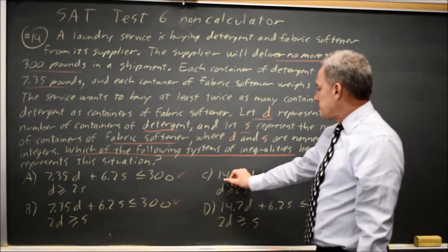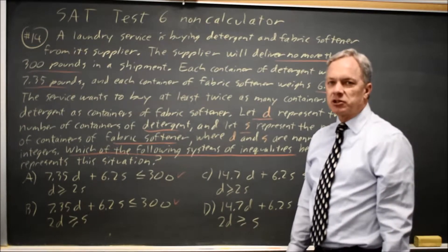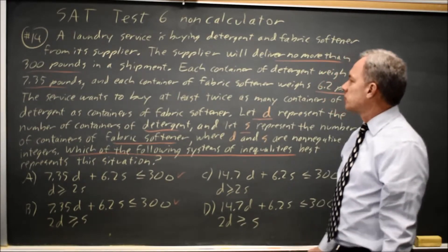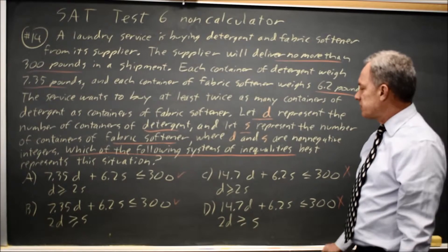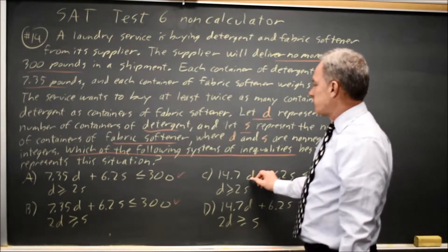In choices C and D, 14.7 times the number of containers of detergent is twice what your detergent weighs, and that incorporates the statement that we're about to address, but that statement should not be incorporated for weight because D is the number of containers.